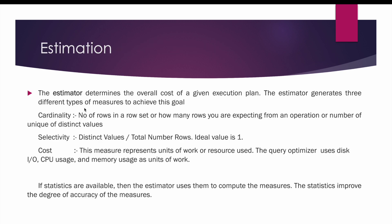The estimator determines the overall cost of a given execution plan and generates three different types of measures to achieve this goal. The first one is cardinality. Cardinality is nothing but the number of rows in a row set, how many rows you are expecting from an operation, or the number of unique or distinct values.